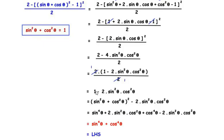Now we do a simple manipulation: we write 1 as (sin²θ + cos²θ)², then expand (sin²θ + cos²θ)² using the (a + b)² formula to get sin⁴θ + 2 sin²θ cos²θ + cos⁴θ, minus 2 sin²θ cos²θ.